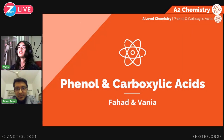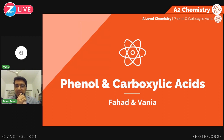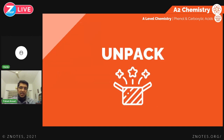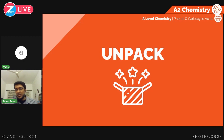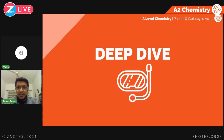Hello and welcome to another Xenots Live. Today we have Mr. Fahad. Today we'll be doing an A2 topic of phenol and carboxylic acids. The last time we had discussed benzene — its structure, its chemical reactions — and we did a few past paper questions. In this episode we'll be looking at a derivative of benzene called phenol, which is basically a benzene ring with the OH group bonded to it. And then after that we'll look at carboxylic acids.